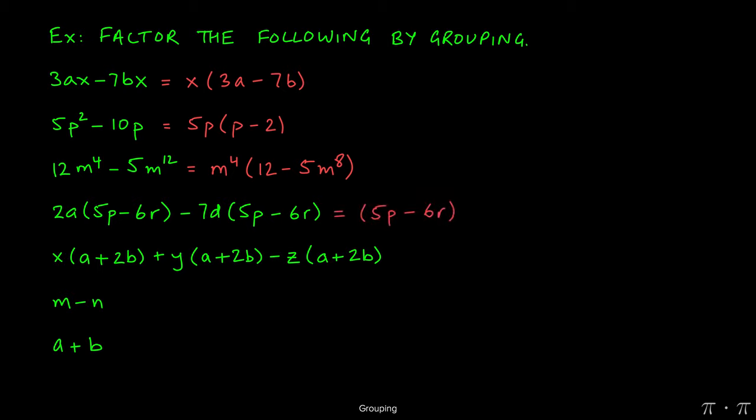For the next problem, we notice that it's not a single number and a single variable, but the entire expression 5p minus 6r that's present in both terms. So we factor that out. That entire complex is our GCF, 5p minus 6r.